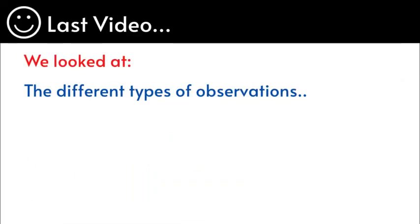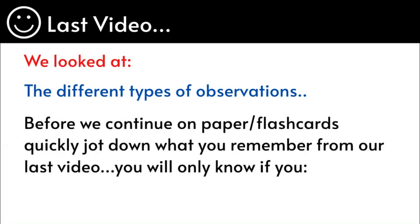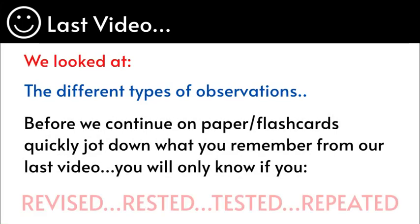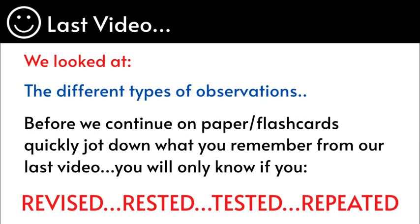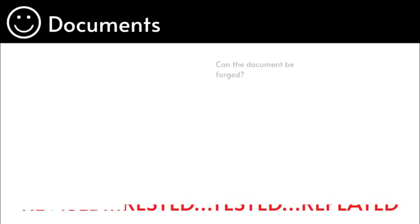Last video we looked at observations, the different types — participant, covert and overt. Before we continue, on paper flashcards quickly jot down what you remember from our last video. You will only know this if you've revised, rested, tested and repeated yourself. We'll be looking at documents and various other methods today, so keep focused.